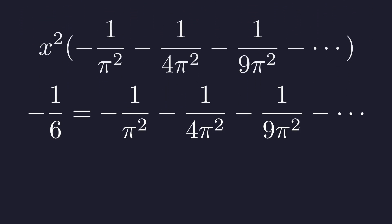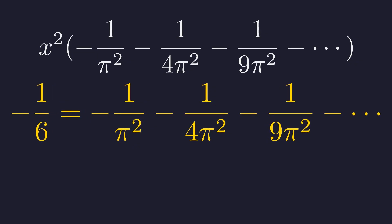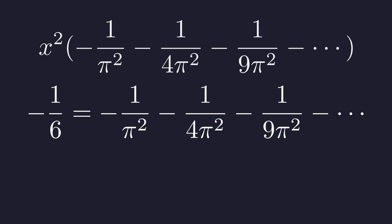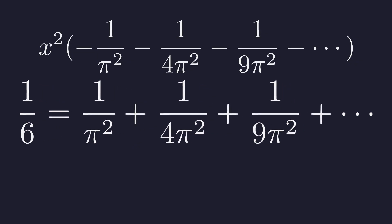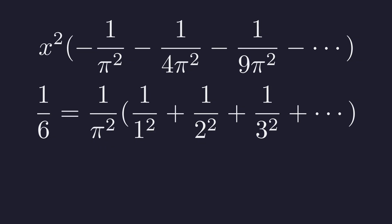Now we equate the coefficients from both sides. We're incredibly close. Let's multiply everything by negative 1 to clean this up. Now we factor out 1 over pi squared from the right side. And look what's inside the parentheses. It's the original Basel problem we started with. 1 over 1 squared plus 1 over 2 squared plus 1 over 3 squared.